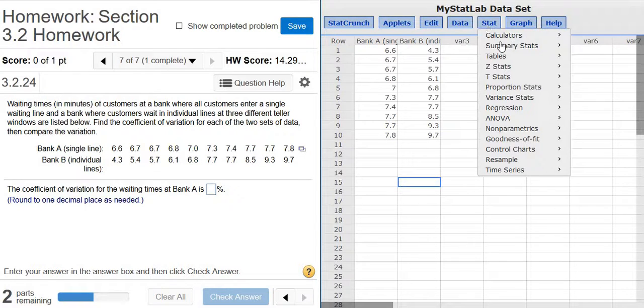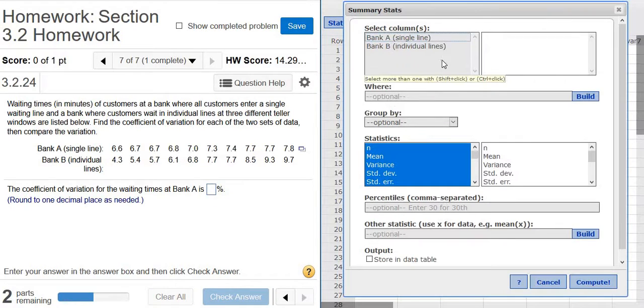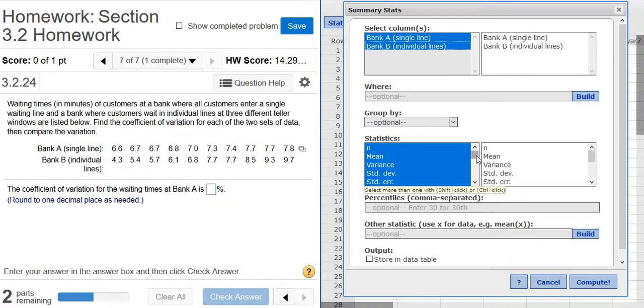Then you go to Stat, Summary Stats, Columns. You want to pick both, so you have to hold Control on your keyboard and left-click.